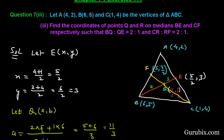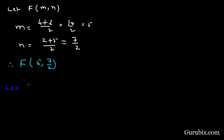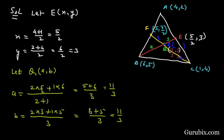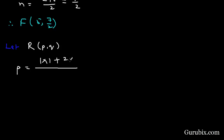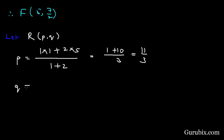We are given a point R on the median CF such that CR to RF is 2 to 1, so CR is 2 and RF is 1. Let the coordinates of R be (p, q). Using the section formula, the p-coordinate will be (1 × 1 + 2 × 5) over (1 + 2), which equals 1 + 10 over 3, which equals 11 over 3.